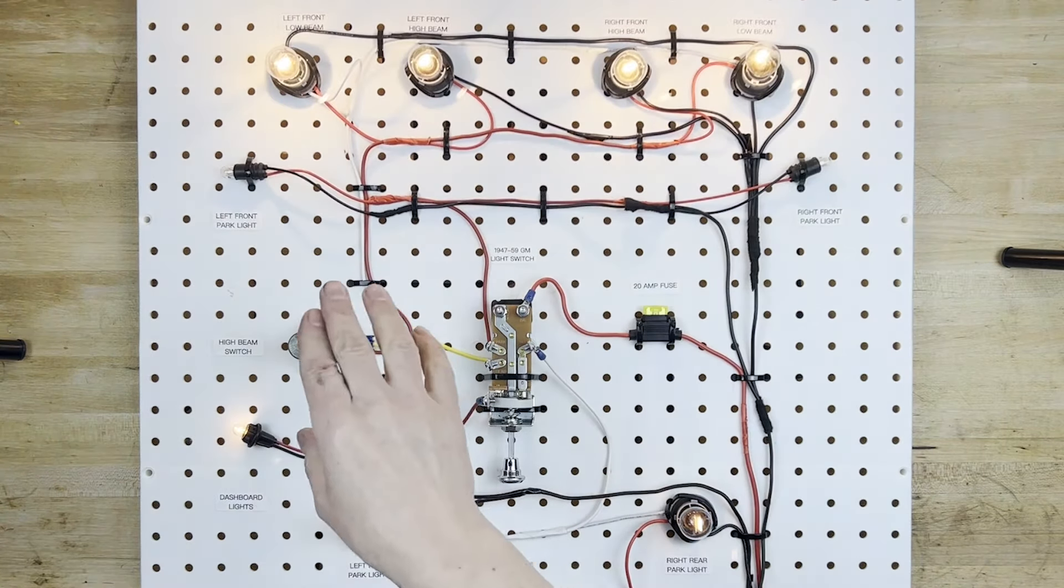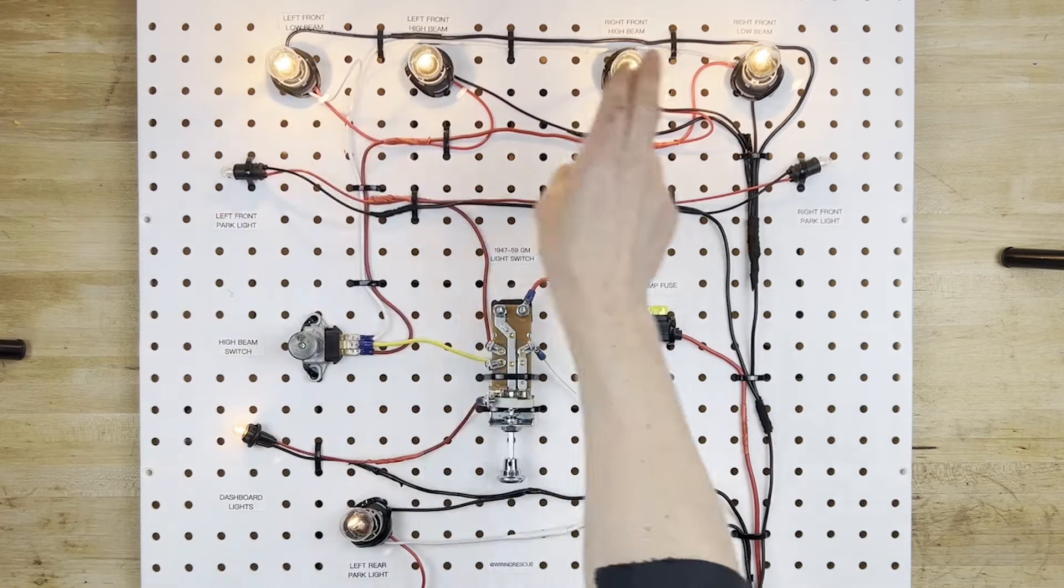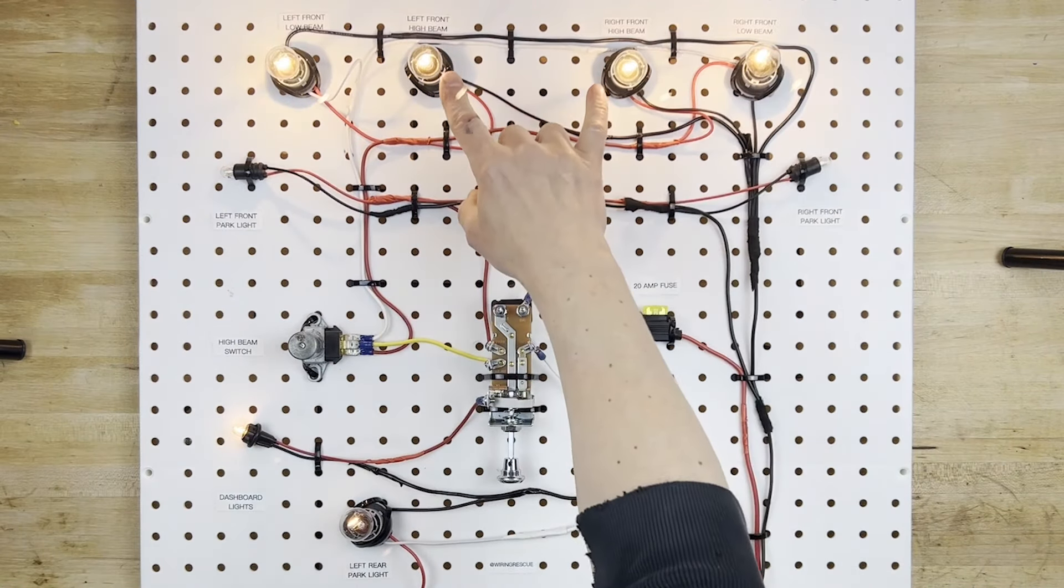Now when we flip the switch here, you can see it actually swaps the filaments in the low beams, and then it turns on the high beams.